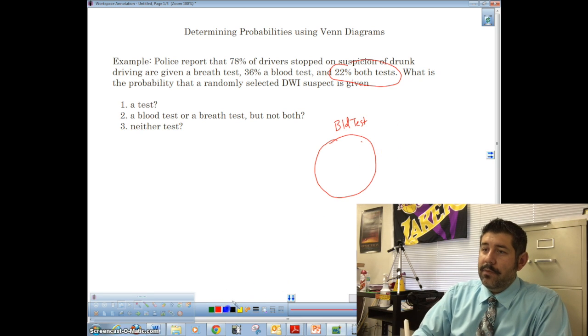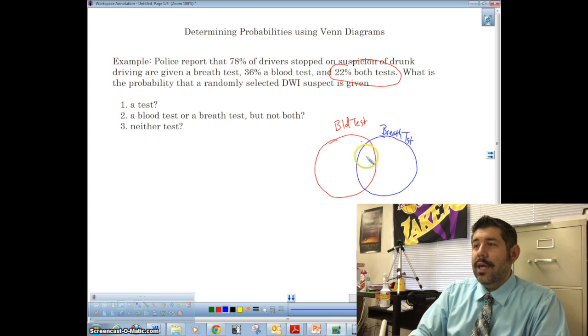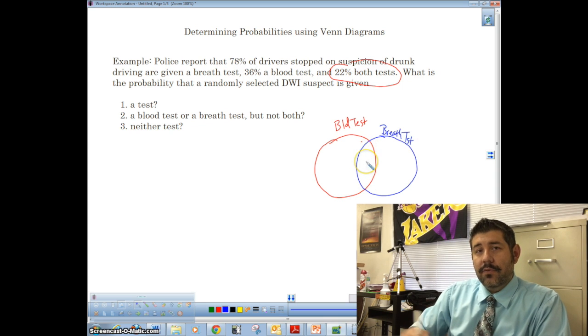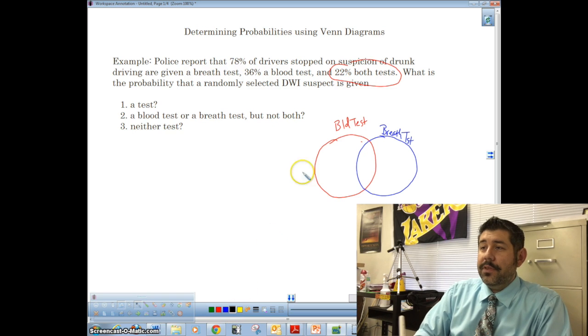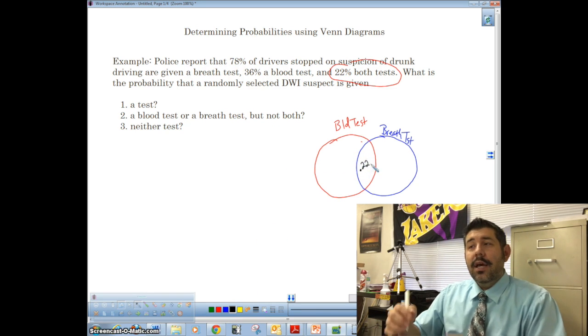And then we have event B, which is the breath test. And we have notice here, there's an intersection of the two, that's where both tests are. So both tests, we know are 0.22, or 22% have both tests.